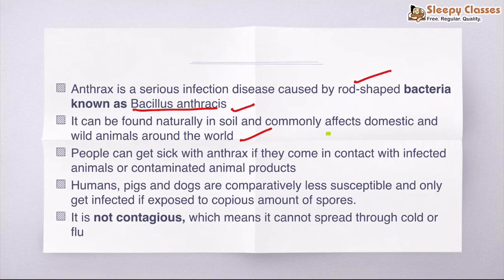Humans, pigs and dogs are comparatively less susceptible than domesticated animals like sheep, horses, cows, etc. And only get infected if exposed to copious amount of spores. So basically, it remains in soil in the form of spores. The important thing in our second statement is that it is not contagious. It cannot spread through cold or flu.